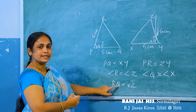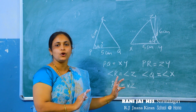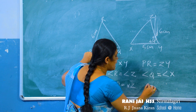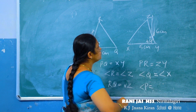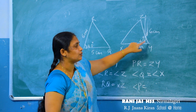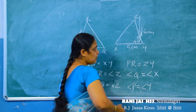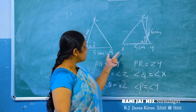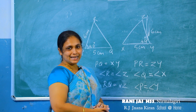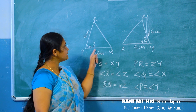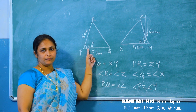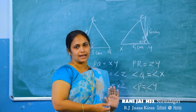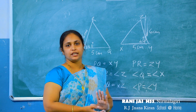The opposite angle of RQ is angle P, and the opposite angle of XZ is angle Y, so angle P equals angle Y — both are 40 degrees. This confirms that in two triangles, if two sides and the angle between them are equal to two sides and the angle between them of another triangle, then those two triangles are equal.